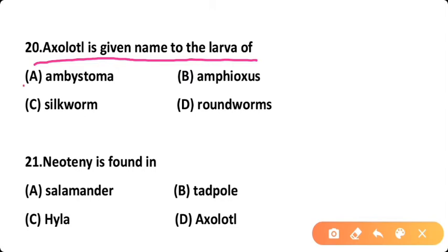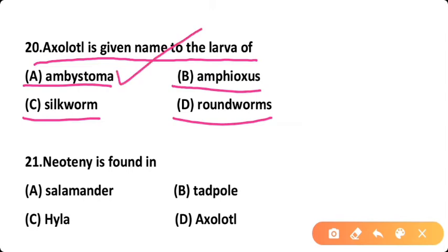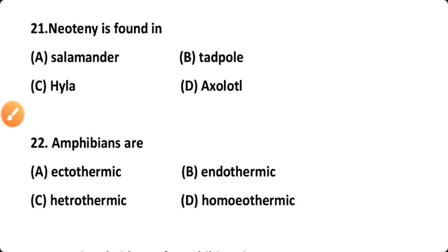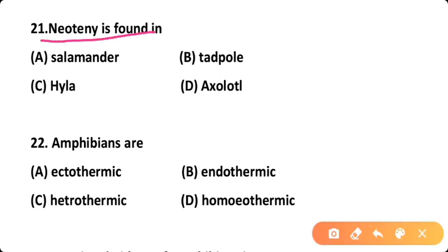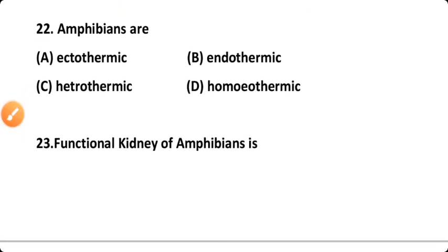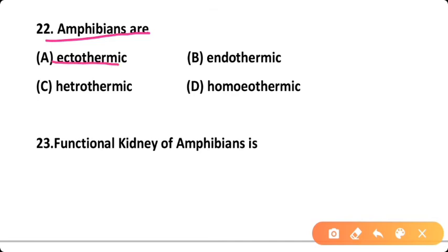Question twenty: Axolotl is the name given to the larva of — Option A: Ambystoma, Option B: amphibians in general, Option C: silkworm, Option D: roundworm. Correct answer is Option A — axolotl is the larva of Ambystoma. Question twenty-one: Neoteny is found in — Option A: salamander, Option B: tadpole, Option C: Hyla, Option D: axolotl. Correct answer is Option D — neoteny is found in axolotl, which is the larva of order Urodela.